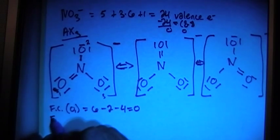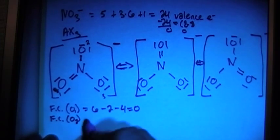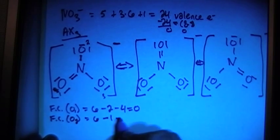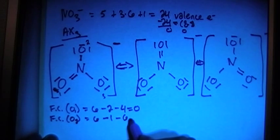The formal charge of oxygen two, which is the top one there, is 6 valence brought in, minus 1 bond, minus 6 non-bonding electrons. That's a negative one formal charge.